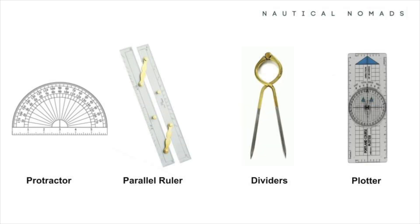Let's discuss the tools used to measure direction on a chart. Protractors are used to measure or draw angles, helping determine bearings or headings by aligning with the chart's meridians. Parallel rulers transfer bearings or directions across a chart without losing alignment, essential for extending course lines. Dividers measure distances in nautical miles and transfer them to the chart's scale. Breton, Portland, and similar plotters combine a protractor and ruler with a rotating compass rose, allowing precise bearings and course plotting. Accurate alignment with the chart's meridians or parallels is key to avoiding navigation errors, especially over long distances.